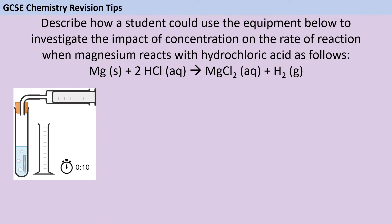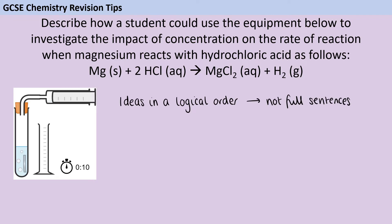Today's question comes from the rate and extent of chemical change topic, which is the first topic in AQA GCSE Chemistry Paper 2. Although this question may look like an essay question, it's really not. Your ideas need to be presented in a logical order, but there are no marks at all for full sentences. You can save yourself time and make your examiner's life easier by giving your answer in the form of bullet points or a numbered list, which is a really strong strategy when writing a method like this.